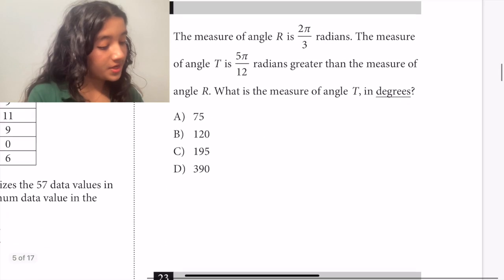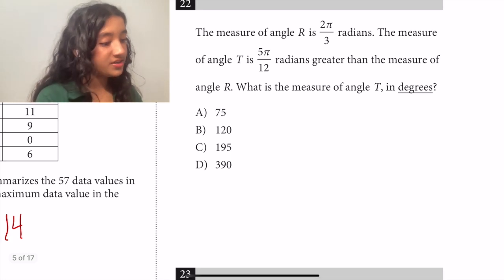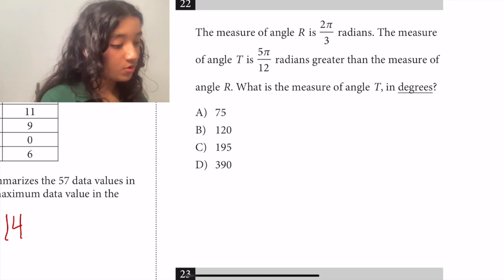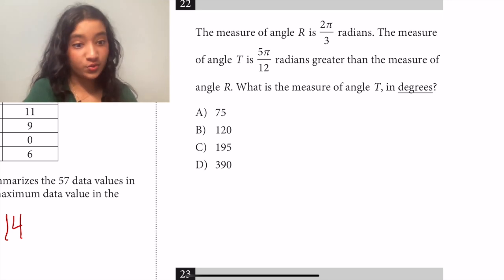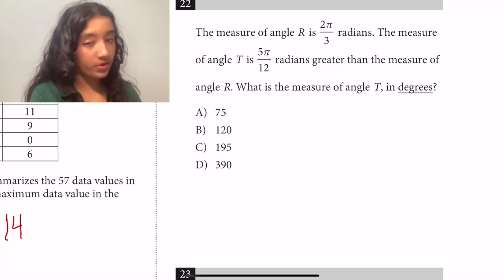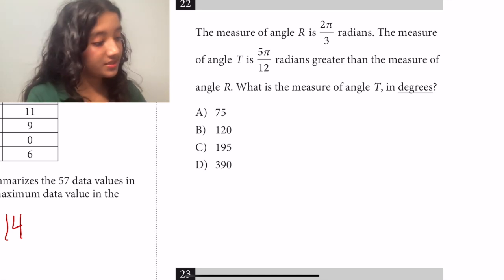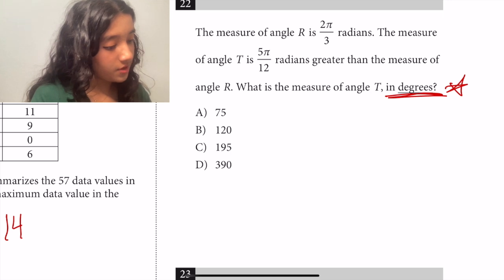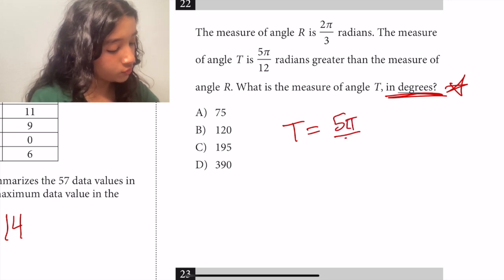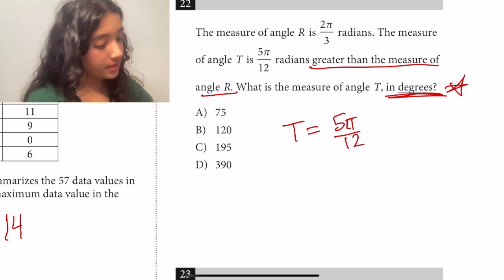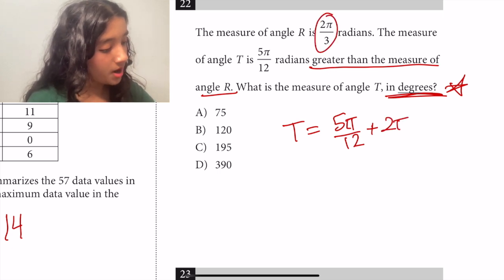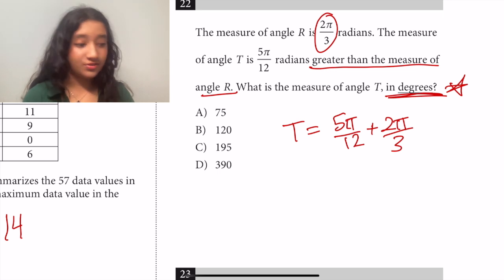Moving on to question 22. The measure of angle R is 2π/3 radians and the measure of angle T is 5π/12 radians greater than the measure of angle R. What is the measure of angle T in degrees? So first let's just focus on the measure of angle T in radians and then we want to make sure to remember to convert it to degrees. So if we have that the measure of angle T is 5π/12 greater than the measure of angle R, that means that we can just add 5π/12 to our value for R, which in this case we're given is 2π/3. So this means that we have to create a common denominator.